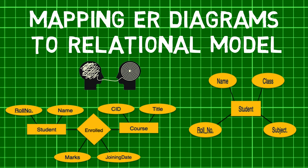Second comes mapping the relationships. Here, we create a table for a relationship, then add the primary keys of all participating entities as fields of the table with their respective data types. If the relationship has any attribute, we add each attribute as a field of the table and declare a primary key composing all the primary keys of participating entities. Then finally, declare all foreign key constraints.